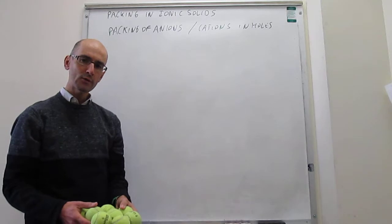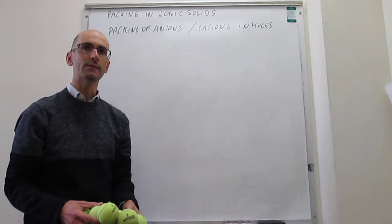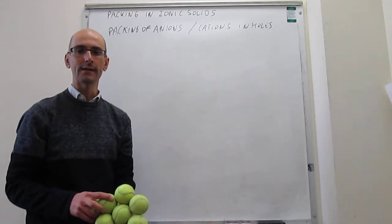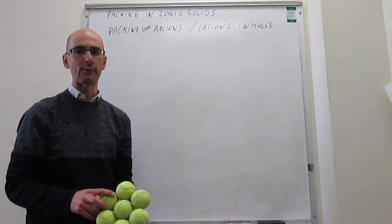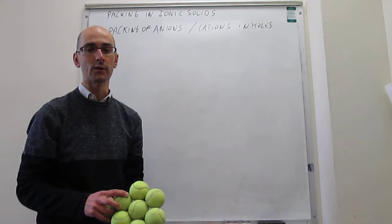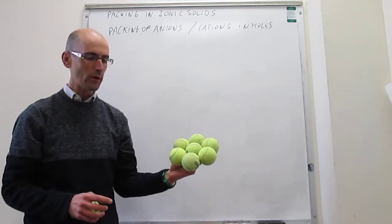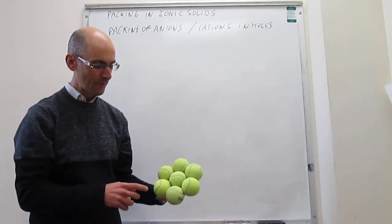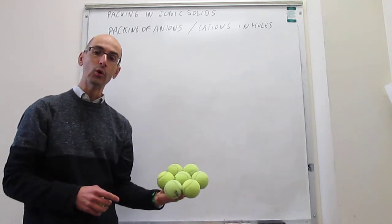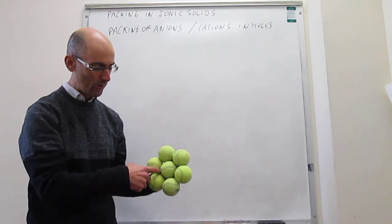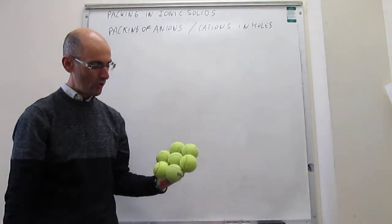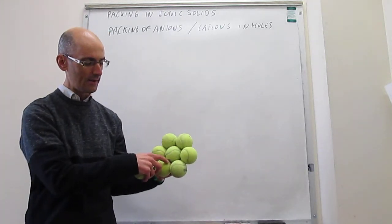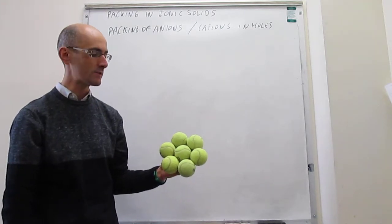If you have a closest-packed structure, like a closest-packed cubic lattice that comes from a face-centered cubic unit cell, this is how one of the layers of the anions would look like. You can already see that there are holes in between the anions. Those are called trigonal holes, because they are in the space in between three anions.